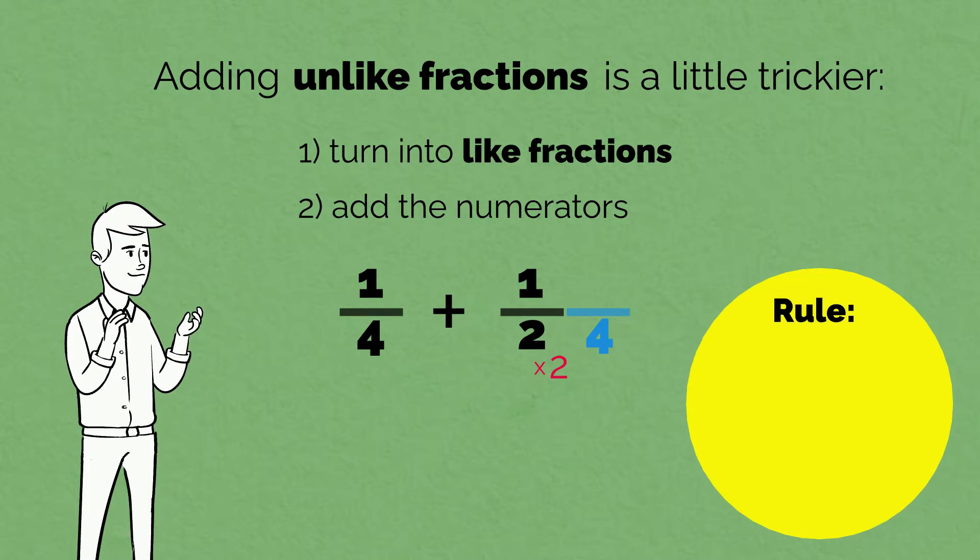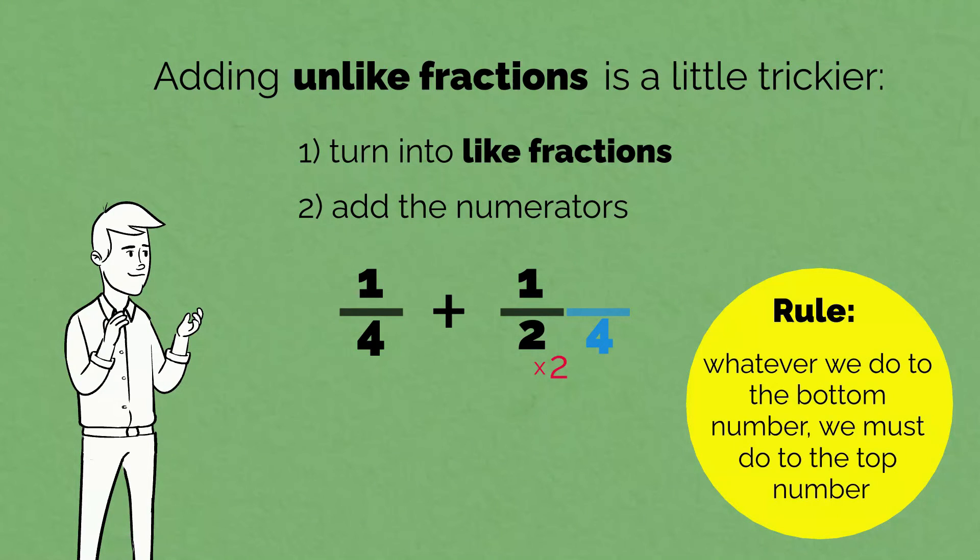Now a very important rule. Whatever we do to the bottom number, we must do to the top number. This means we must multiply the top number by 2. 1 times 2 equals 2.